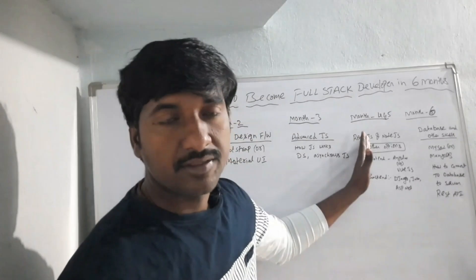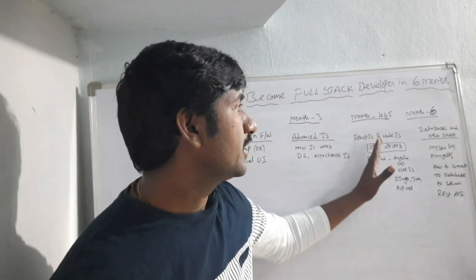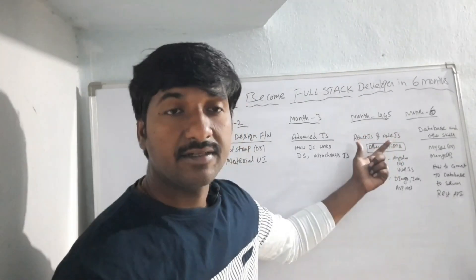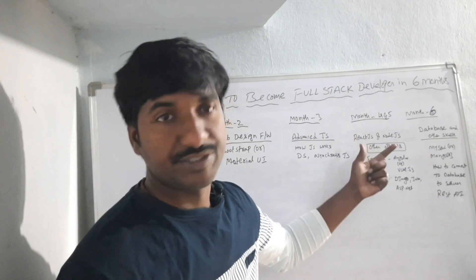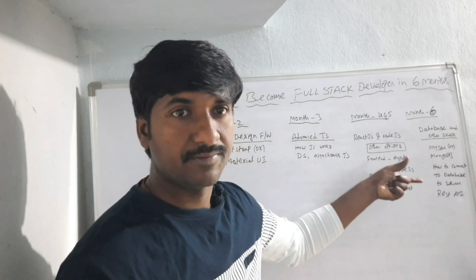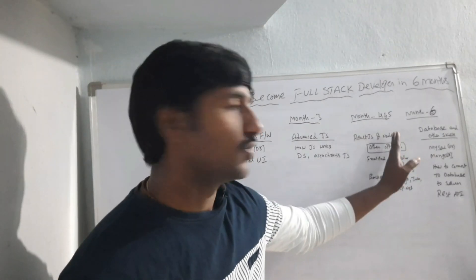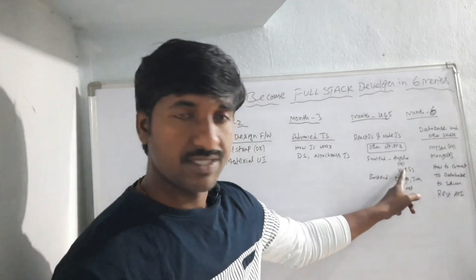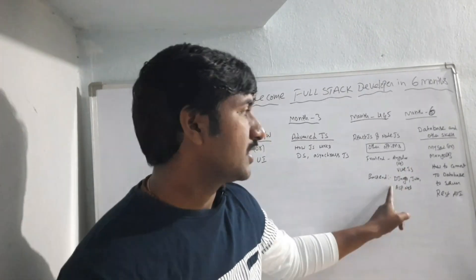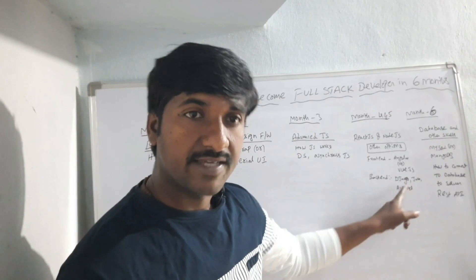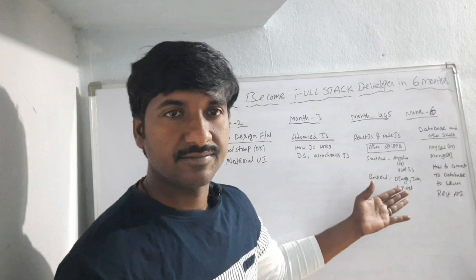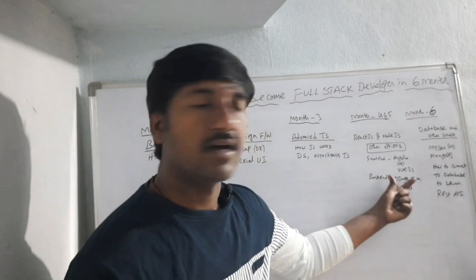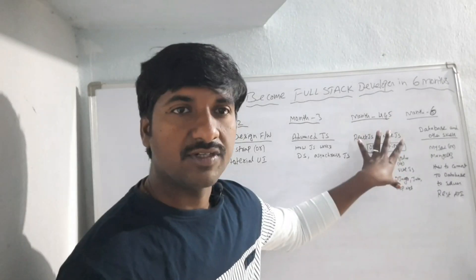In the fourth and fifth month, you have to learn React.js with Node.js if you want to become a JavaScript full stack developer. Other options are also available — for front-end you can learn either Angular.js or Vue.js, and for back-end technology you can learn Django, Flask, Java, or ASP.NET. Based on your interest, within two months you can learn one back-end technology — either ASP.NET, Java, or Django.